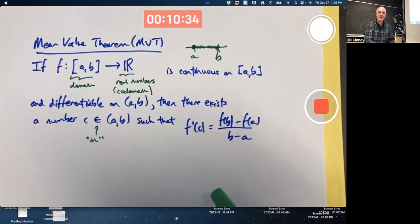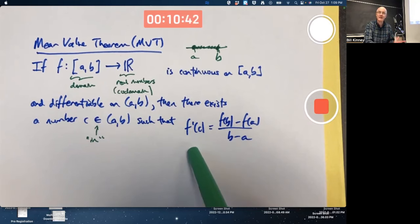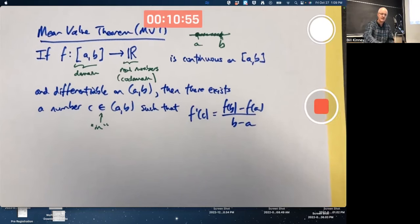And I mentioned last time, and we'll emphasize today with examples, that this means there's some place C where the slope of the tangent line, f'(C), equals the slope of the secant line between the two extremes on the graph, the left and right endpoints of the graph. So let's do a couple examples today to illustrate this.